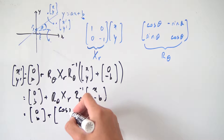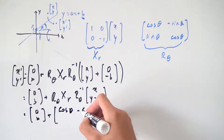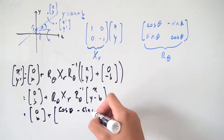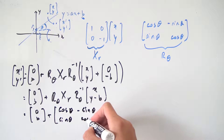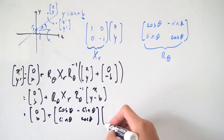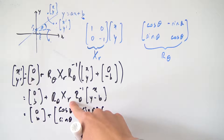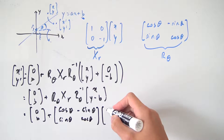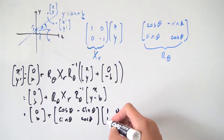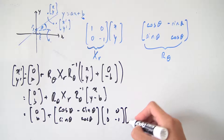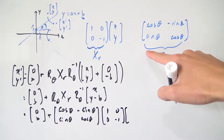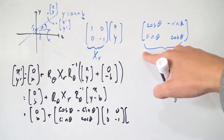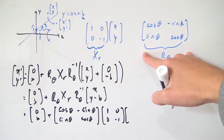So this is equal to (0, b) plus the rotation matrix R(θ), which is cosine theta, minus sine theta in the first column, sine theta and cosine theta in the second column — then we have Xr, the x-axis reflection matrix, which is (1, 0, 0, -1).